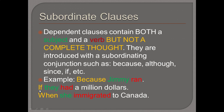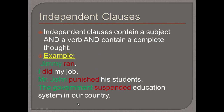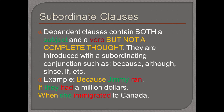'If they had a million dollars' — what's going to happen? Are they going to buy a house, a plane? We don't have the complete idea. 'When she immigrated to Canada' — what happened next? Again, not a complete idea. Even though these clauses may be four or five words long, they don't give a complete thought, while 'Jimmy ran' — just two words — does. What matters is whether the sentence gives you a complete, meaningful thought.